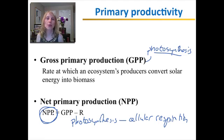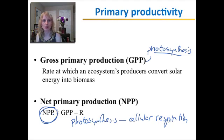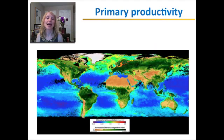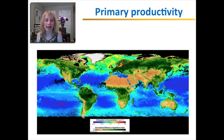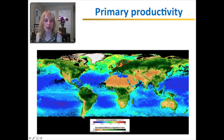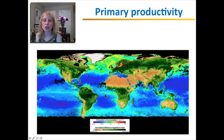So the NPP determines the number of consumers that an ecosystem can support. We can look at different regions of the world and how productive they are. This diagram shows that for land, the more green it is, the more productive it is — rainforests are very productive, the desert is not. And in water, the more red it is, the more productive it is. It's generally just the coasts that have the most productivity; there is very little productivity in the middle of the open ocean.